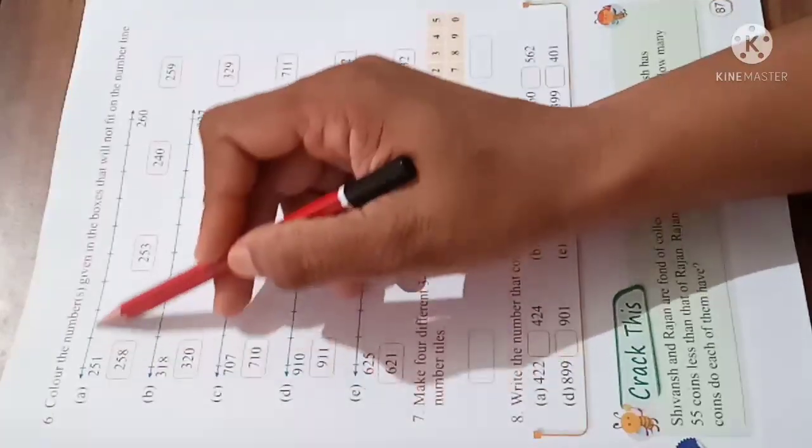Students, we have given a number line. Here we have given some numbers, and here in boxes there are some numbers. Which numbers fit in this line and which are not? Which are not fit in this line, we have to take out.